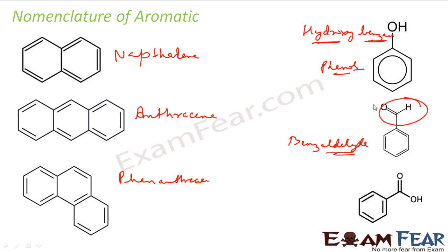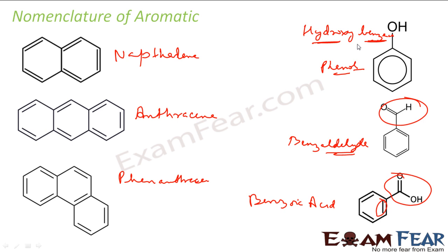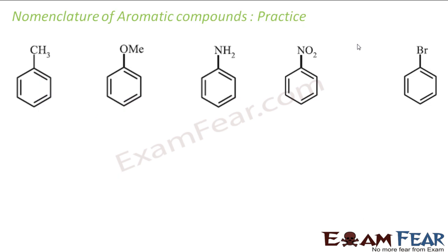This compound is called benzaldehyde because aldehyde is the main group, and we have seen that aldehyde has higher priority than alkene. This is also benzoic acid because carboxylic acid has higher priority over alkene. Here alkene has higher priority over hydroxy, giving hydroxybenzene.